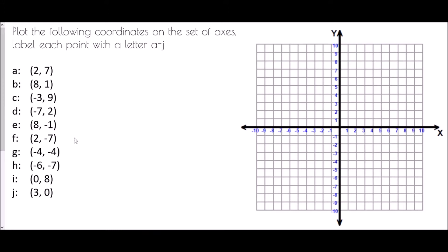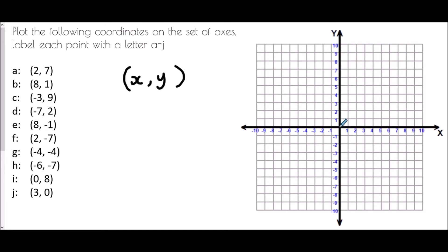Coordinates all have the same appearance: a set of brackets, two numbers with a comma in between. The first value is the x coordinate and the second is the y coordinate. The first number tells us how to move left or right, and the second value tells us how to move up or down.